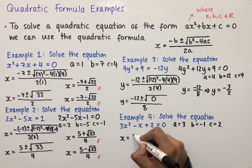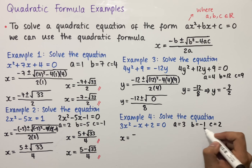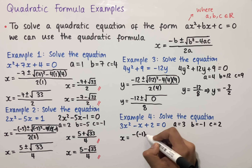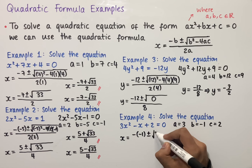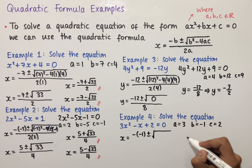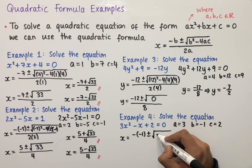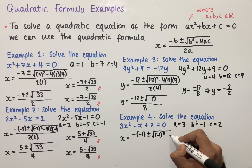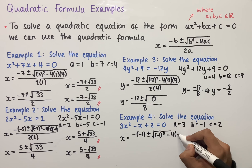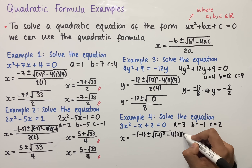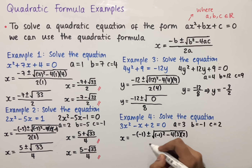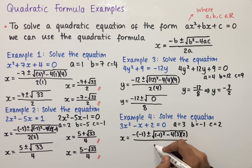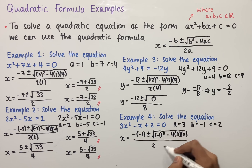The final example is to solve the equation 3x² - x + 2 = 0. In this case, a = 3 (coefficient of x²), b = -1 (coefficient of x), and c = 2 (the number on its own).